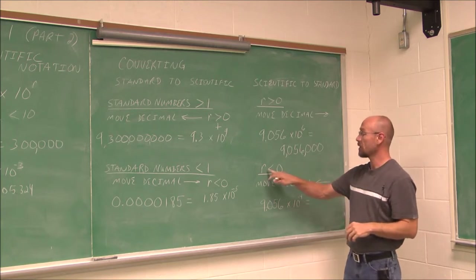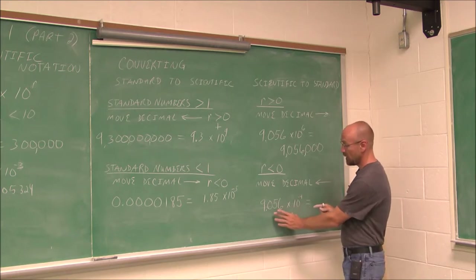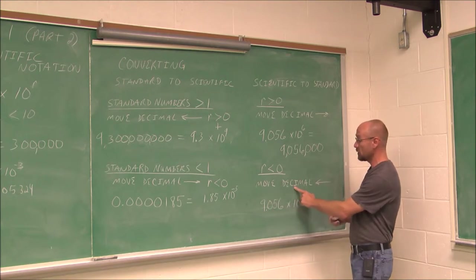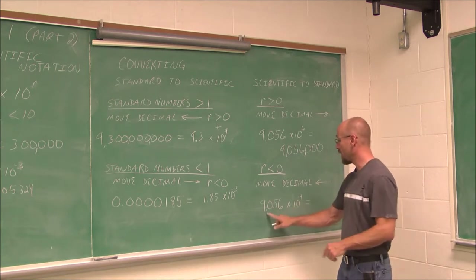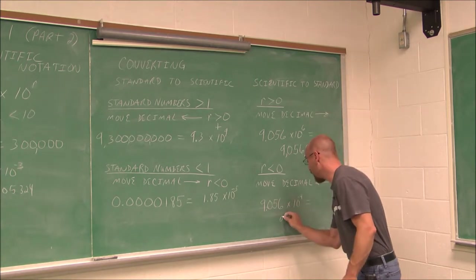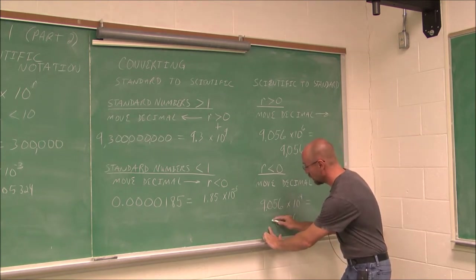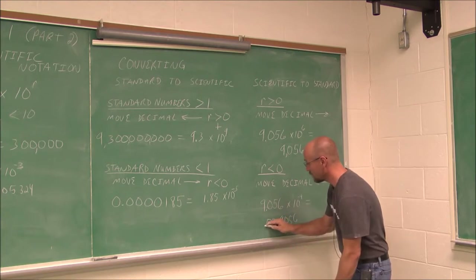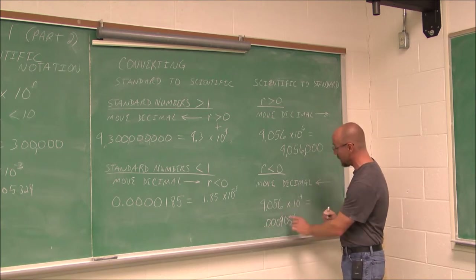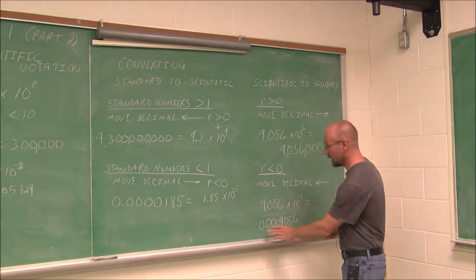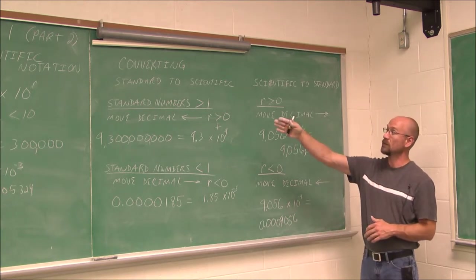What if r is less than 0? A negative r value tells us this is a very small number, so we move the decimal to the left, further from the ones place. Moving it 4 spots to the left — the digit 9 is four factors of 10 from the decimal. We put in a leading zero so we don't miss the decimal symbol. That's how we convert from standard to scientific, or scientific to standard.